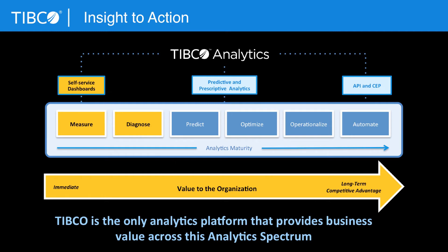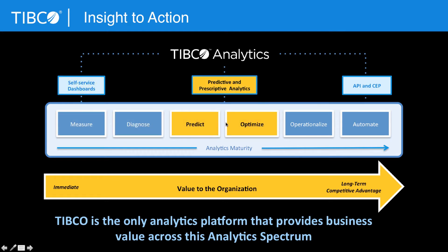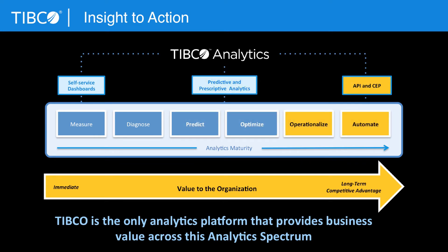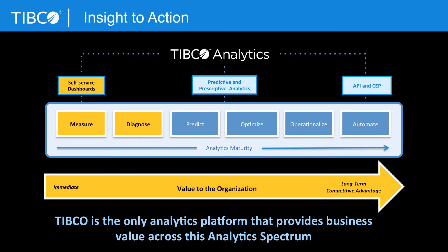We'll start the journey with self-service dashboards. Six Sigma philosophy says if you want to improve a business process, you first have to measure it. We will build a dashboard using the latest features of Spotfire that make this very simple, including our new recommendations engine. We'll then move into some predictive analytics, especially for the customer journey and customer engagement, and then into some API and event processing pieces to take us into more real-time applications. But let's start with measurement and diagnosis.